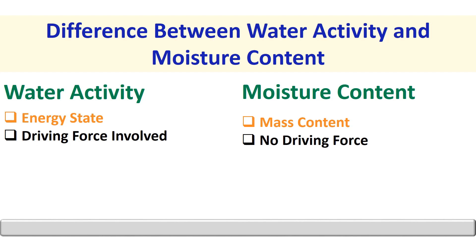Second, a driving force — that is, chemical potential — is used to define water activity, whereas there is no driving force used to define the water content.